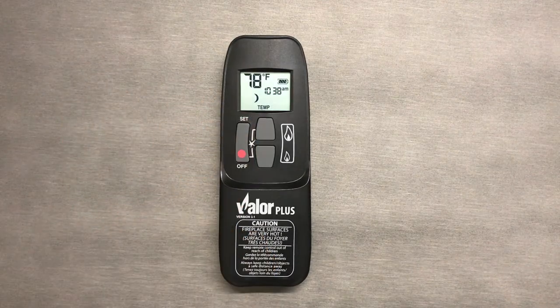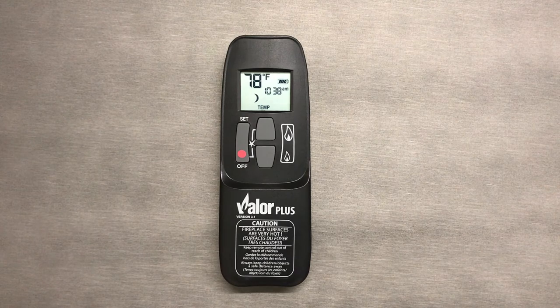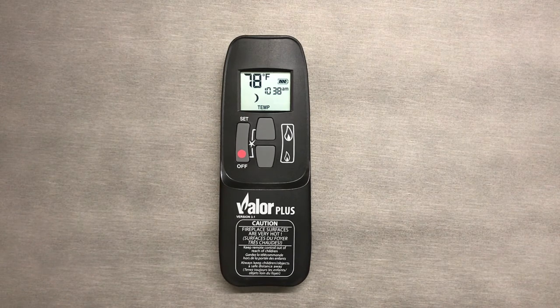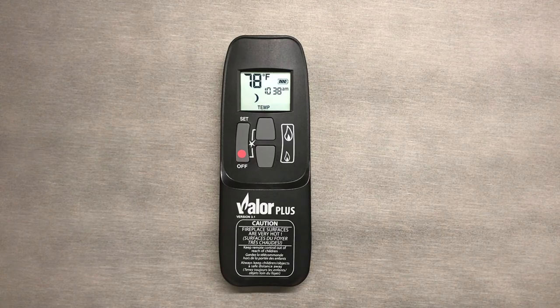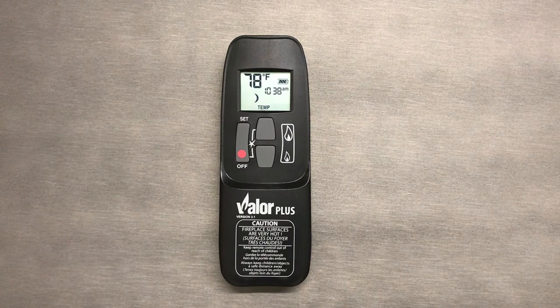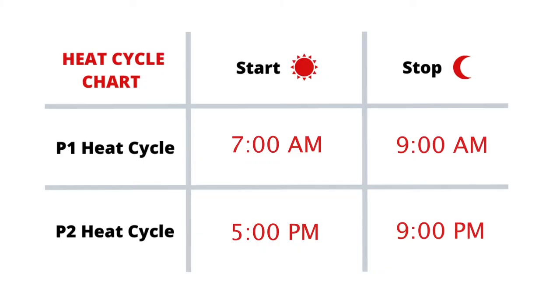Let's say I am gone every day from 9 a.m. to 5 p.m., and I want my fireplace to keep my home at 75 degrees in the morning when I wake up and 70 degrees when I get home in the evening. Here is a chart to represent what I would set my time events at.